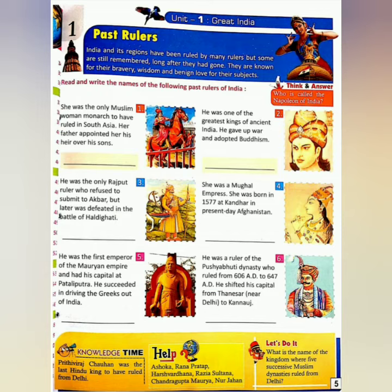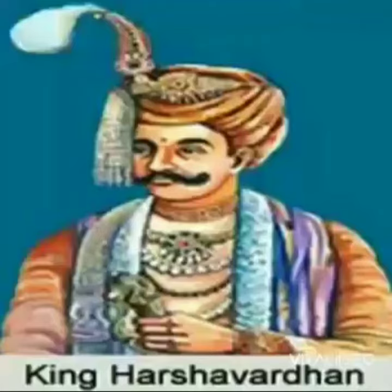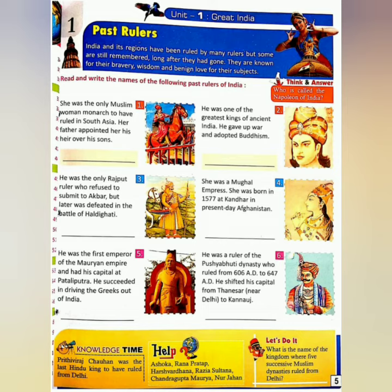We have one more brave ruler from the Pushyabhuti dynasty. Dynasty means a line of hereditary rulers of a country. He was Harshvardhana. He was one of the most important Indian emperors of the 7th century. He ruled from 606 AD to 647 AD. He shifted his capital from Thanesar to Kanauj. These were a few prominent past rulers of India. Read the chapter carefully.